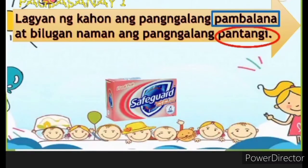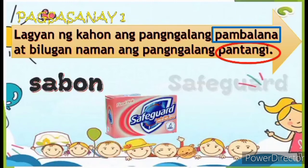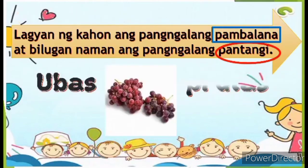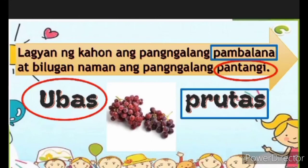Ano ang unang larawan na inyong nakikita? Sabon! Safeguard! Alin sa sabon o sa Safeguard ang pangalang pambalana? Tama! Ang sabon ay ang pangalang pambalana. Ang Safeguard ay pantangi. Ang sunod na larawan ay ubas. Ang prutas ay ang pangalang pambalana, samantalang ang ubas ay pangalang pantangi.